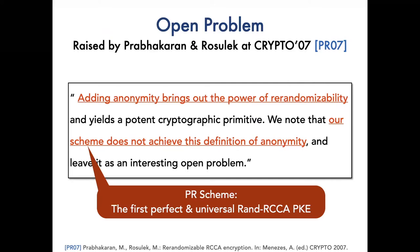The first perfect and universal Rand-RCCA PKE in the standard model was proposed by Prabhakaran and Rosulek at Crypto 2007. We call this construction the PR scheme for short. Unfortunately, the PR scheme does not achieve receiver anonymity, and how to construct a receiver anonymous Rand-RCCA PKE was left as an interesting open problem. But more surprisingly, even after many years, this open problem remains unsolved to date.